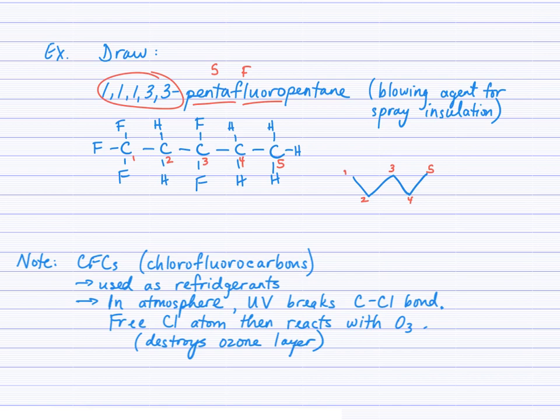And then off of carbon three, we're going to have the two fluorines. So one can come up, and one can angle here. And then off of carbon one, we're going to have three fluorines. So one here, one here, and one here. So that's also acceptable as a drawing when you sketch 1,1,1,3,3-pentafluoropentane.